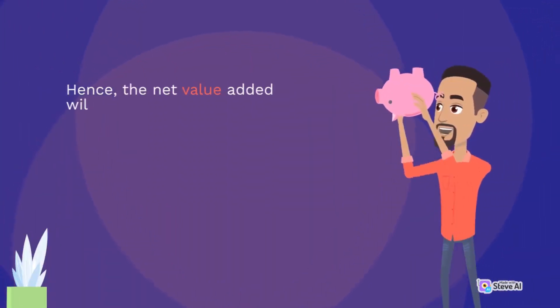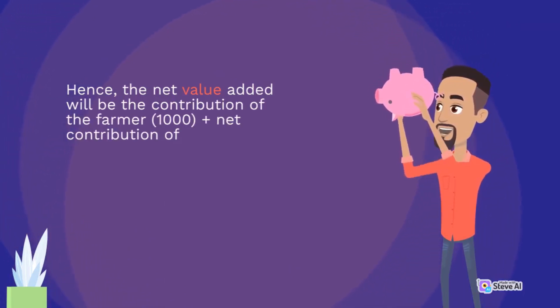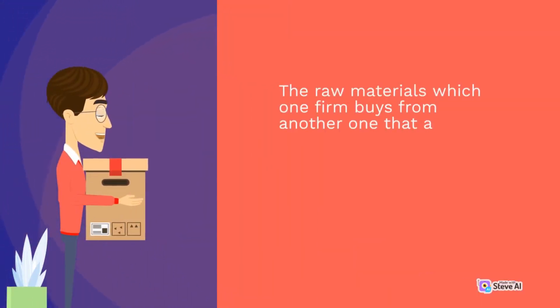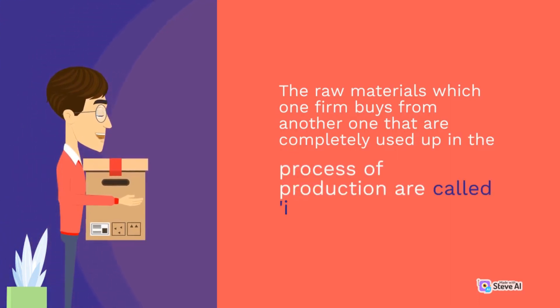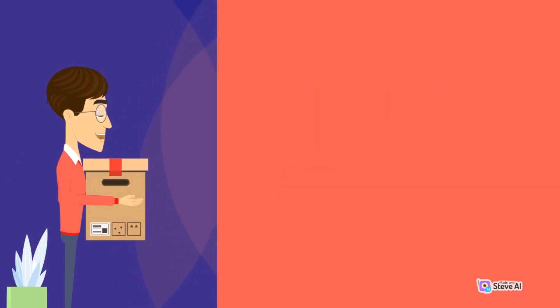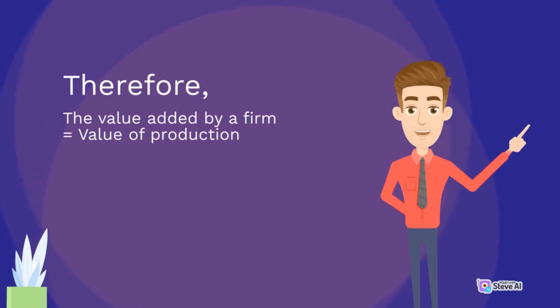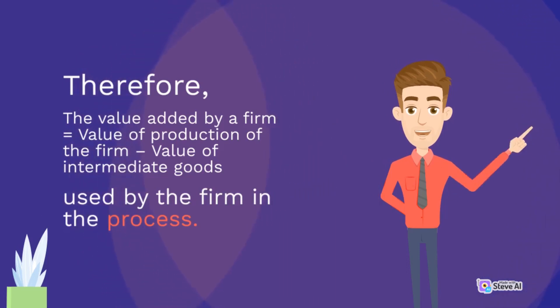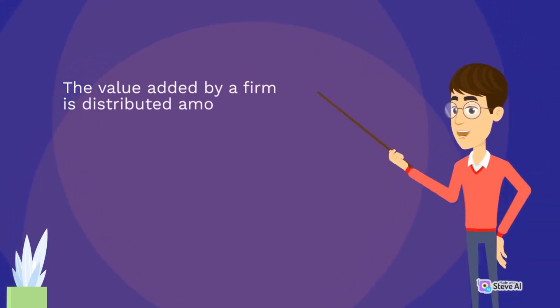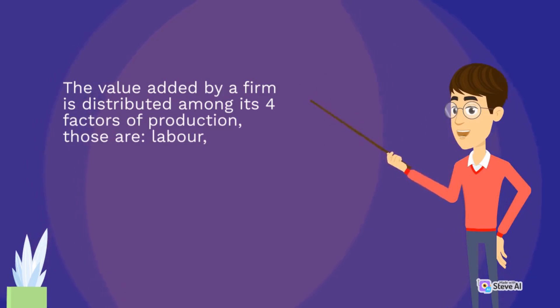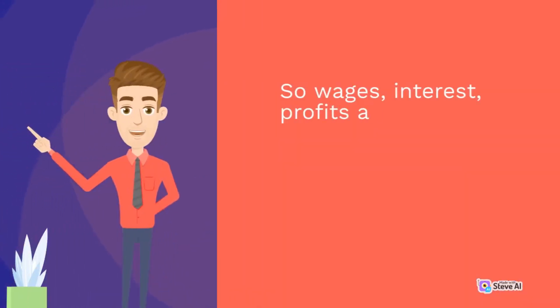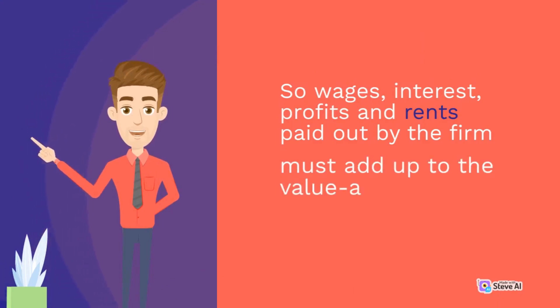Hence, the net value added will be the contribution of the farmer, 1000, plus the net contribution of the ketchup manufacturer, 1000, equals 2000 INR. The raw materials which one firm buys from another that are completely used up in the process of production are called intermediate goods. Therefore, the value added by a firm equals the value of production of the firm minus the value of intermediate goods used by the firm in the process. The value added by a firm is distributed among its four factors of production: labor, capital, entrepreneurship, and land. So wages, interest, profits, and rents paid out by the firm must add up to the value added of the firm.